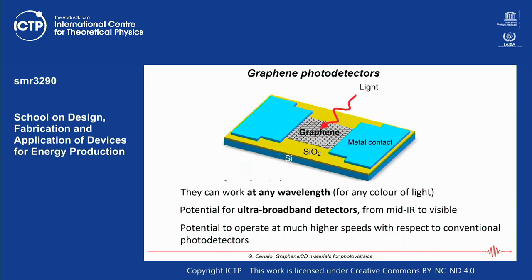This universal absorption is quite unique. Any light detector based on a semiconductor has a band gap and works only over a limited frequency range. But graphene, due to its universal absorption, can absorb any color of light from the mid-infrared to the ultraviolet, giving it potential as an ultra-broadband detector that can respond to light of any color. Having a detector that can address all regions of the electromagnetic spectrum simultaneously has very big potential.